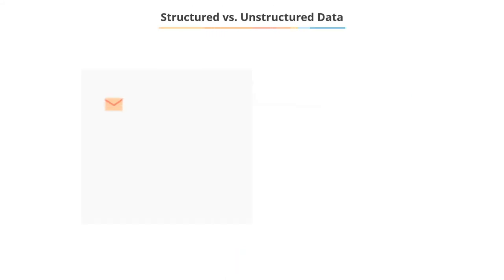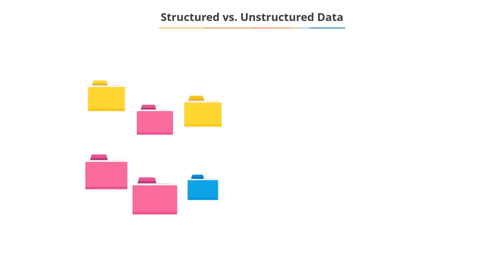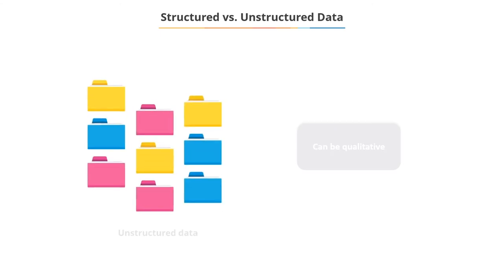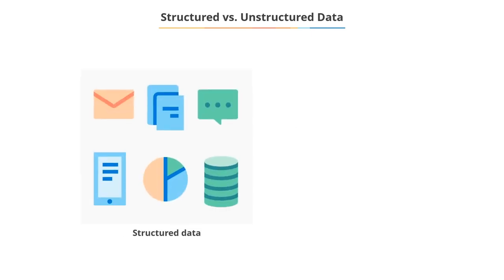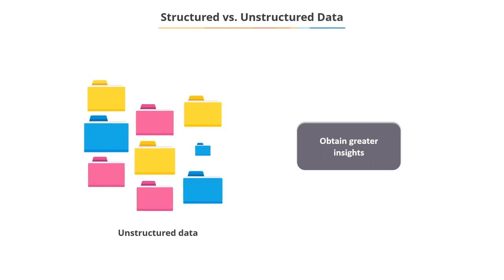Generally, structured data is easier to search through and use during analysis. Unstructured data could include qualitative information as well. While structured data helps in ease of search and objective analysis, greater insights can be obtained from unstructured data. Therefore, both types of data are useful.